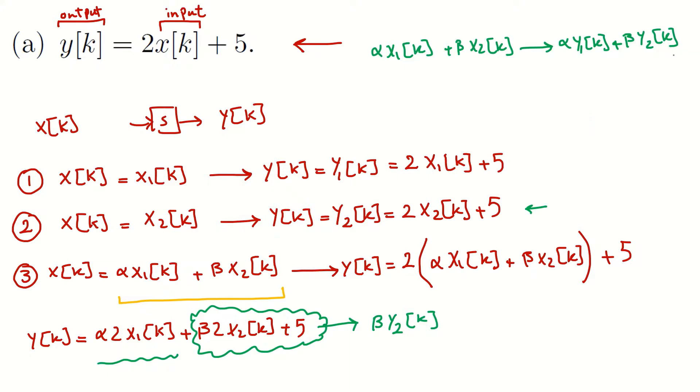So we found that in the output, we found this guy here in the output, but for the rest it doesn't match with what we expect. What we expect is for this one to be alpha 2 x1k plus 5. We have this part, we have alpha, we have this part here, but this 5, we don't have the 5 there.